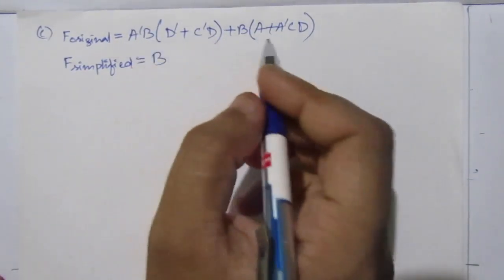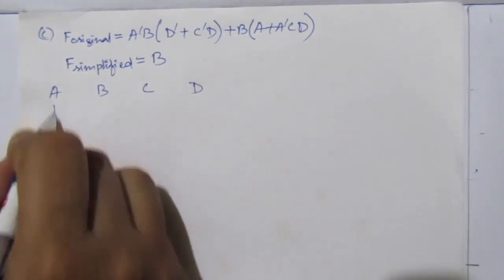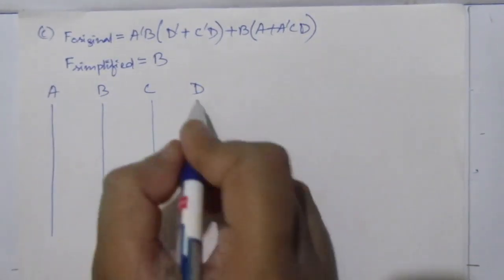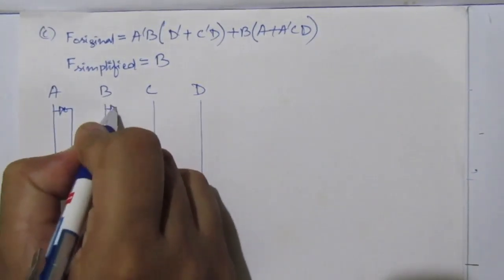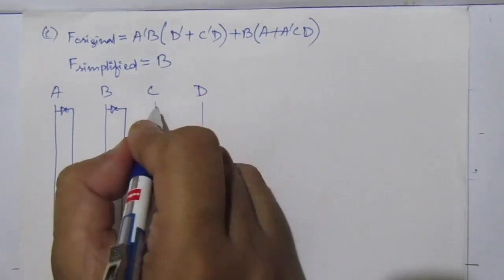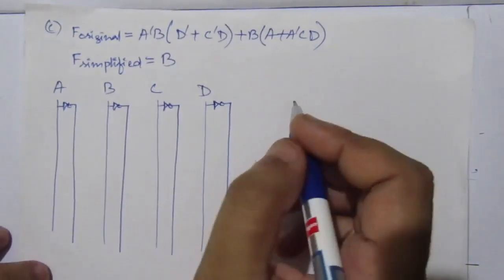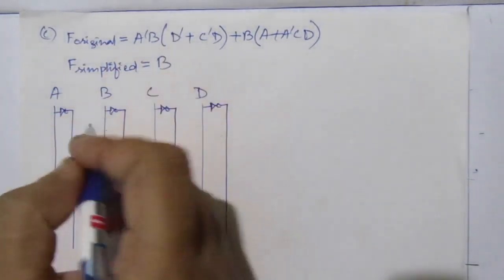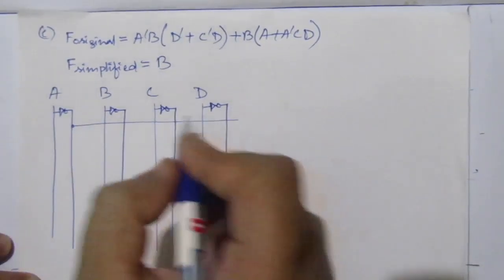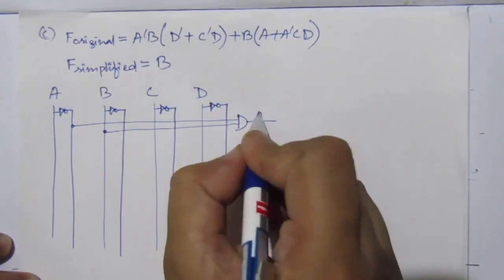Here we have four input variables a, b, c, and d. We use a NOT gate to get ā, another NOT gate to get b̄, another inverter for c̄, and another inverter for d̄. First, let us find ā·b: ā is this line, b is this line — use an AND gate to get ā·b.